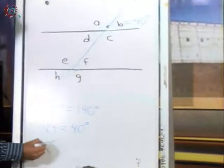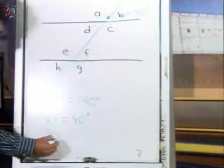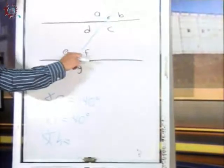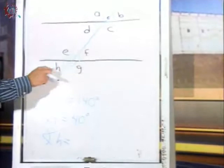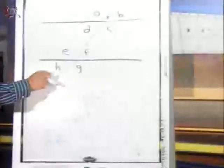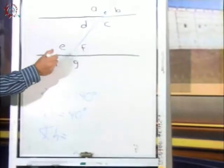¿Cuál es la medida del ángulo H? Si ya determinamos que el ángulo F mide 40 grados, quiere decir que el H también mide 40 grados por ser opuesto por el vértice.